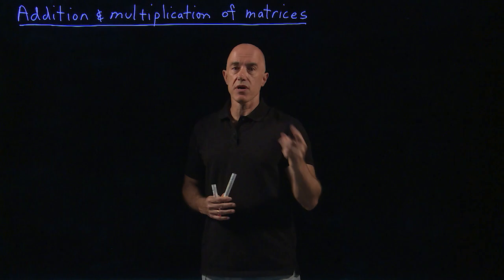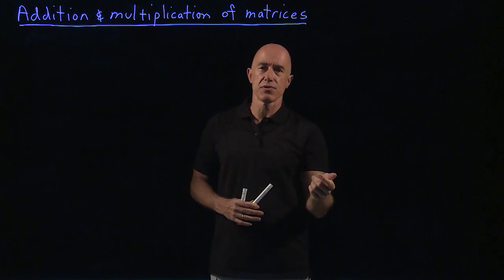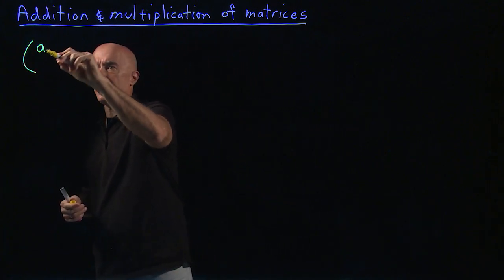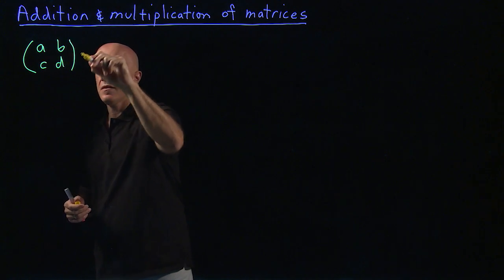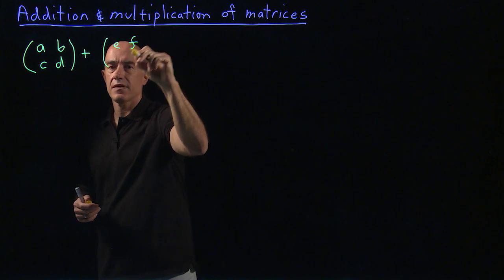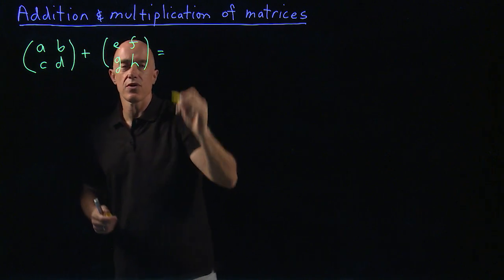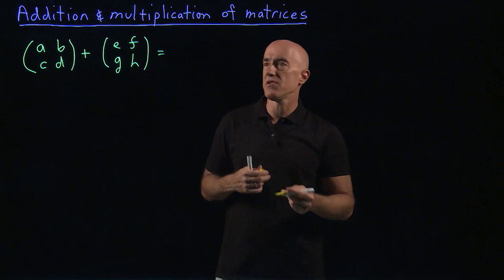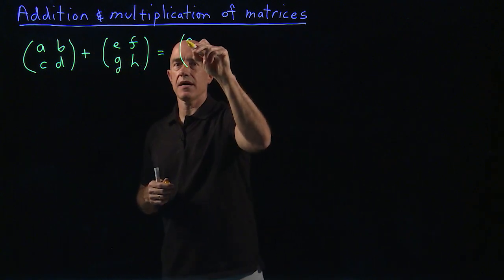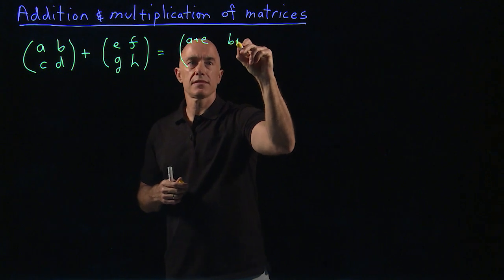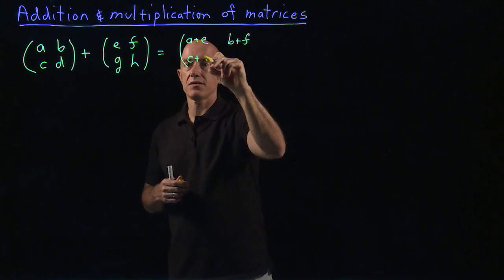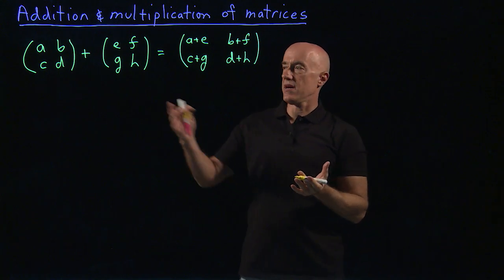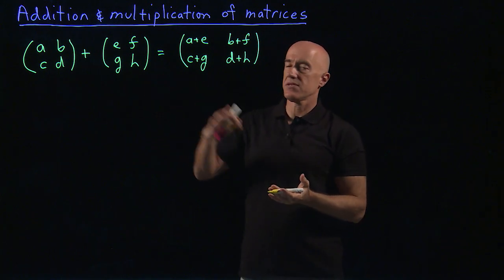Let's talk about just adding two matrices. With two by two matrices, we add [A, B, C, D] plus [E, F, G, H]. It's very simple — all you have to do is add each of the components. So this would just be [A+E, B+F, C+G, D+H]. You just add the corresponding elements of the matrices.